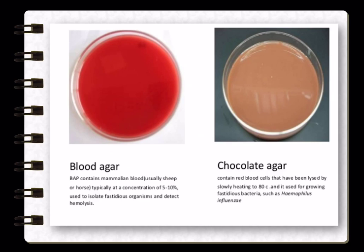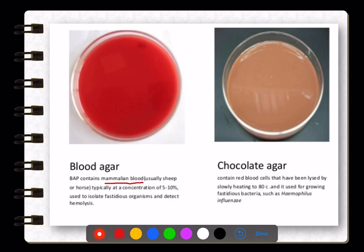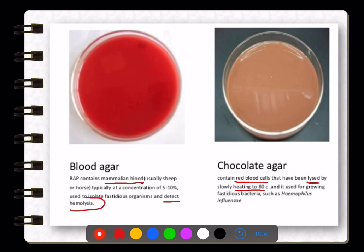The difference between blood agar and chocolate agar: blood agar consists of mammalian blood, while chocolate agar also contains red blood cells that have been lysed by slow heating to 80°C. Blood agar is mainly used to detect the hemolytic pattern of bacteria and to isolate fastidious organisms.